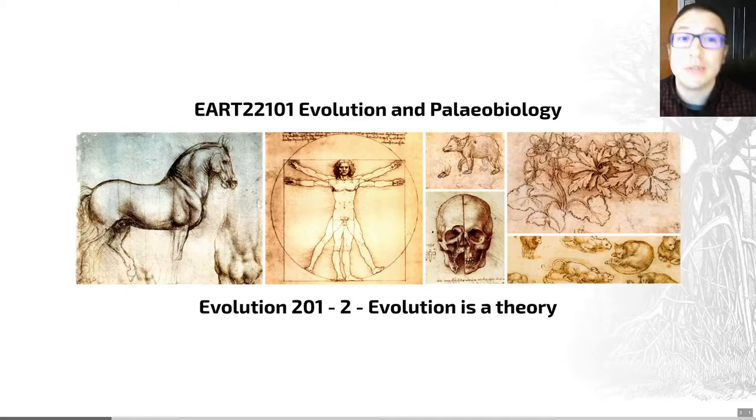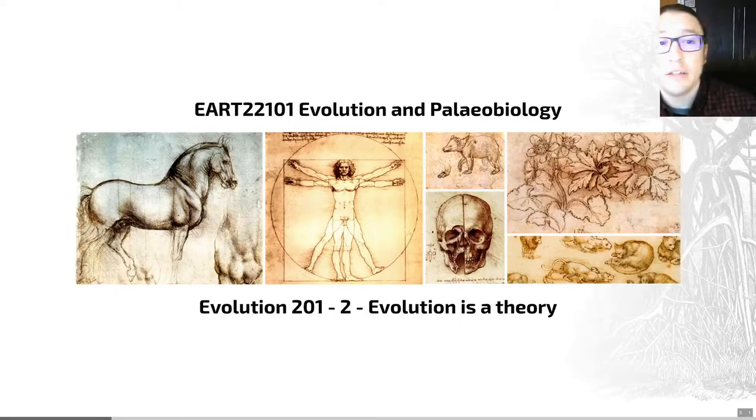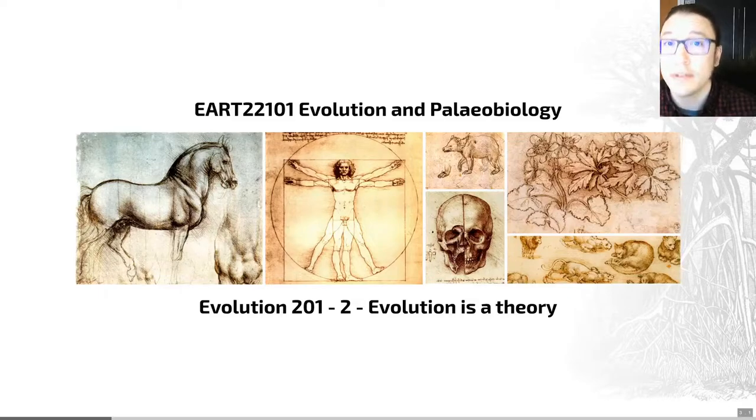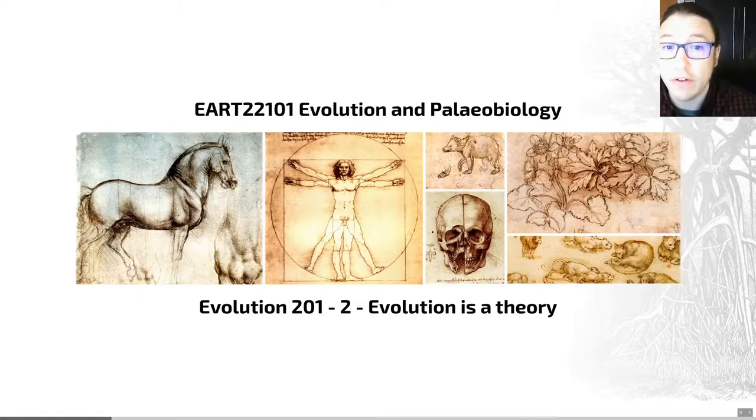So for example we can talk about the modern synthesis. This reflects the early to mid 20th century developments in evolutionary theory that combined the idea of Darwinian selection with a population-oriented view of genetics. That's something that if you're reading about the history of evolution you will almost certainly come across and we've built on that ever since.